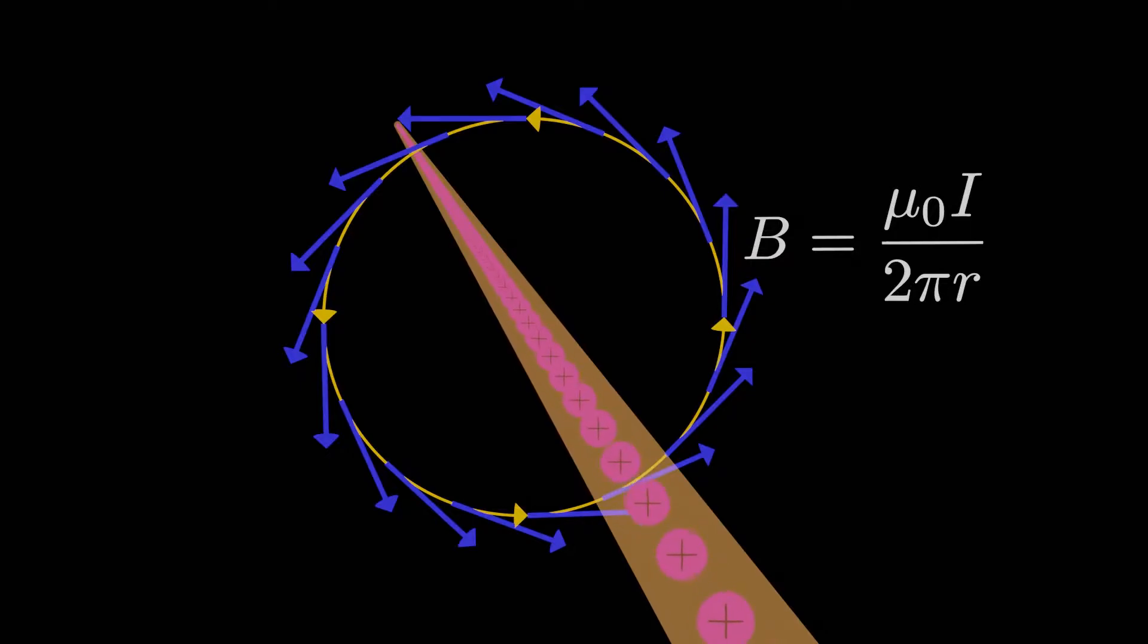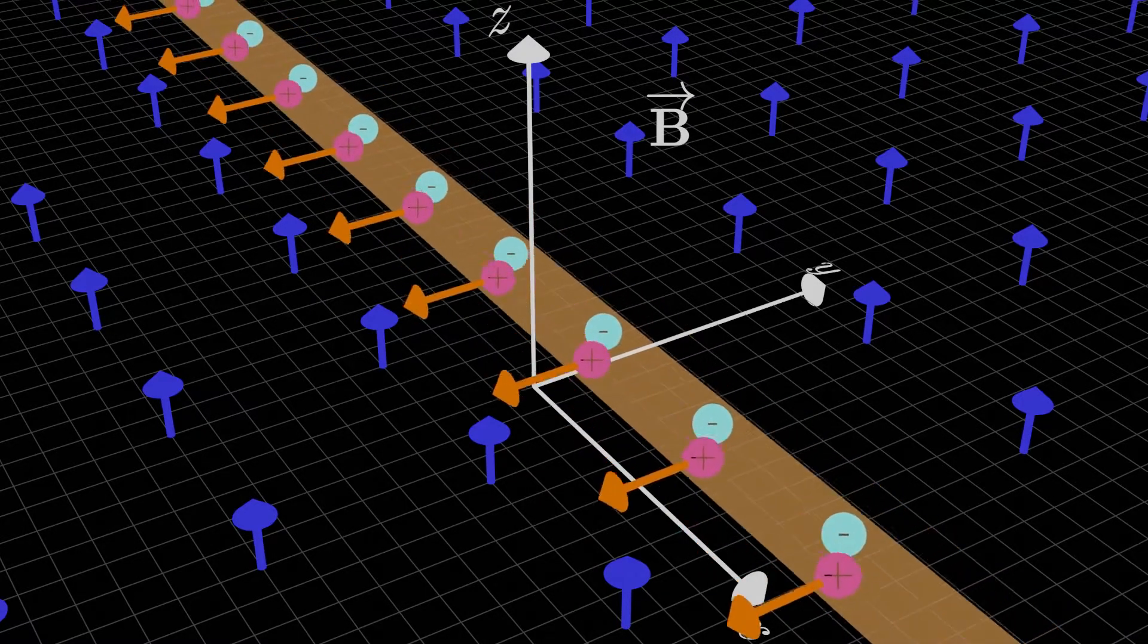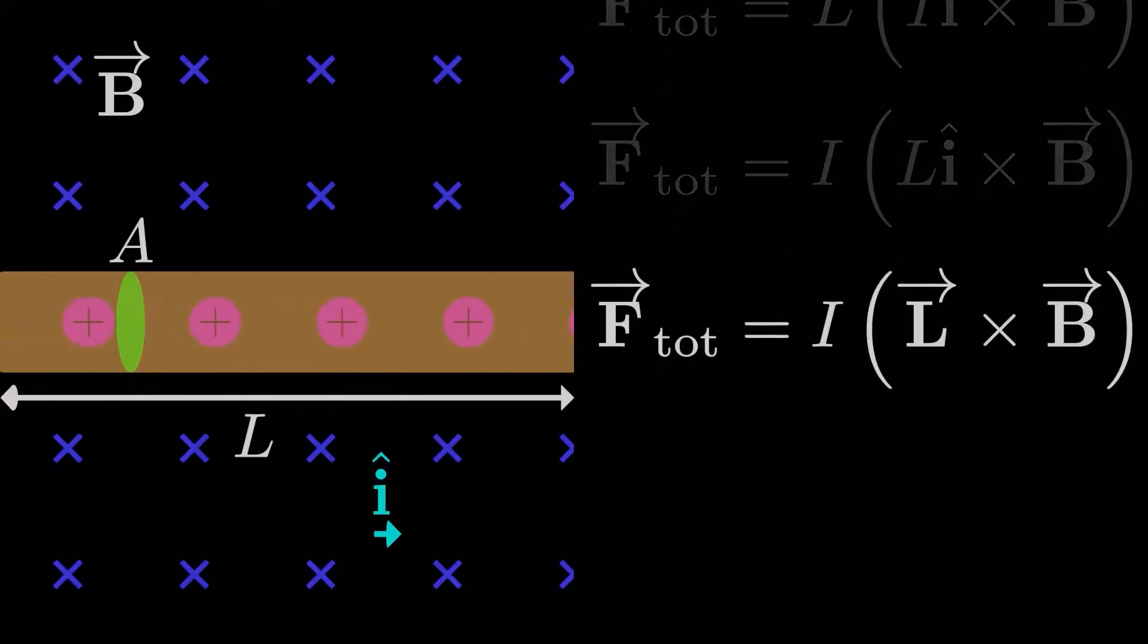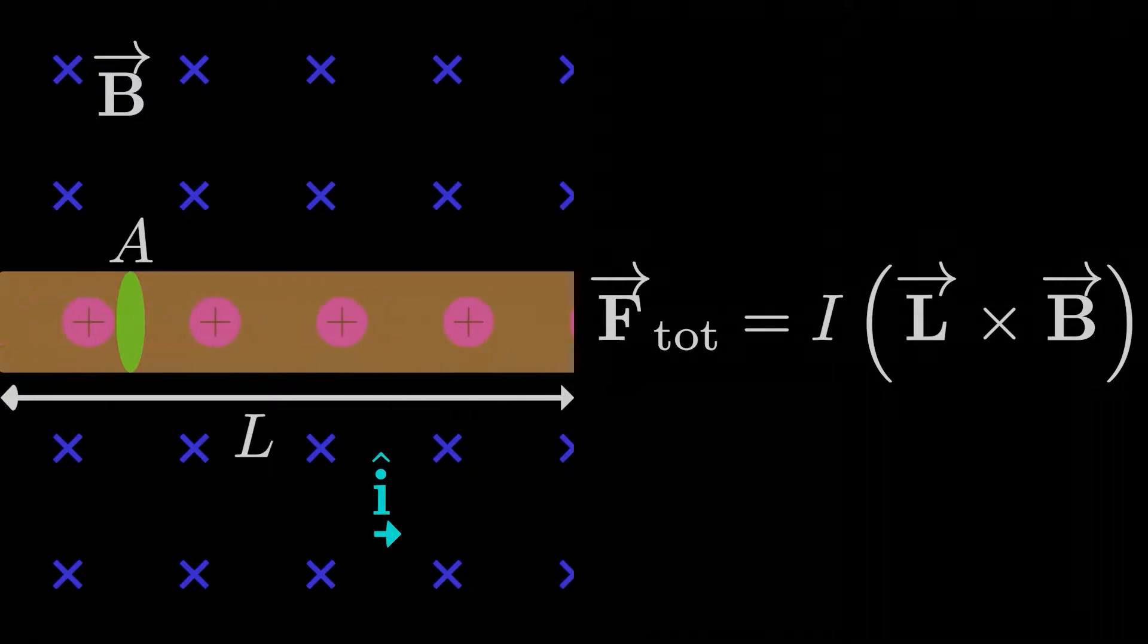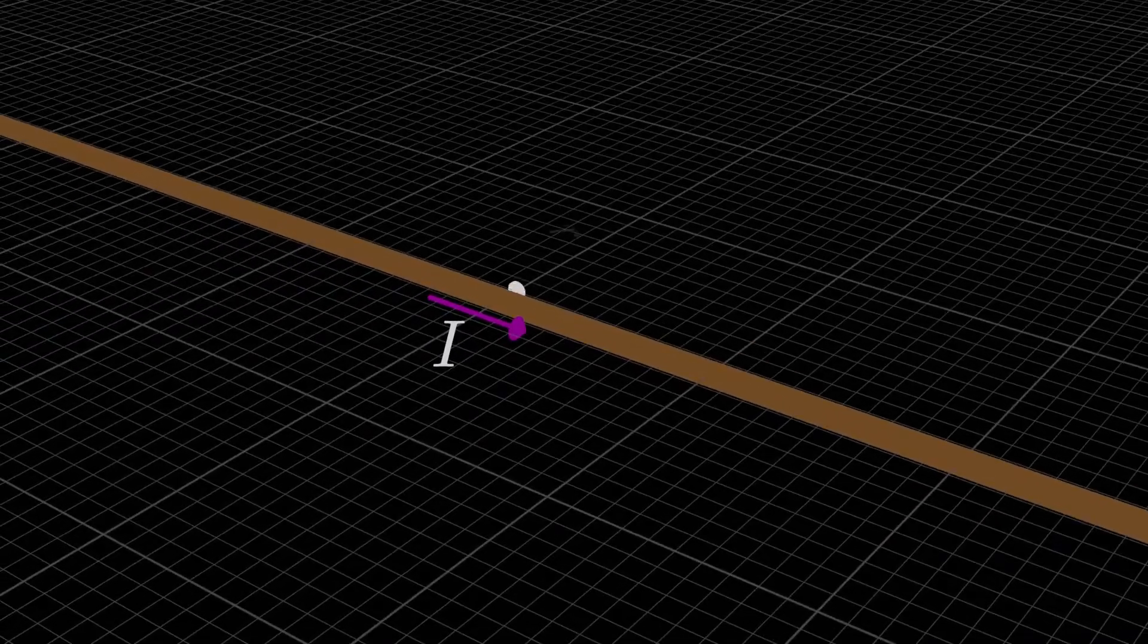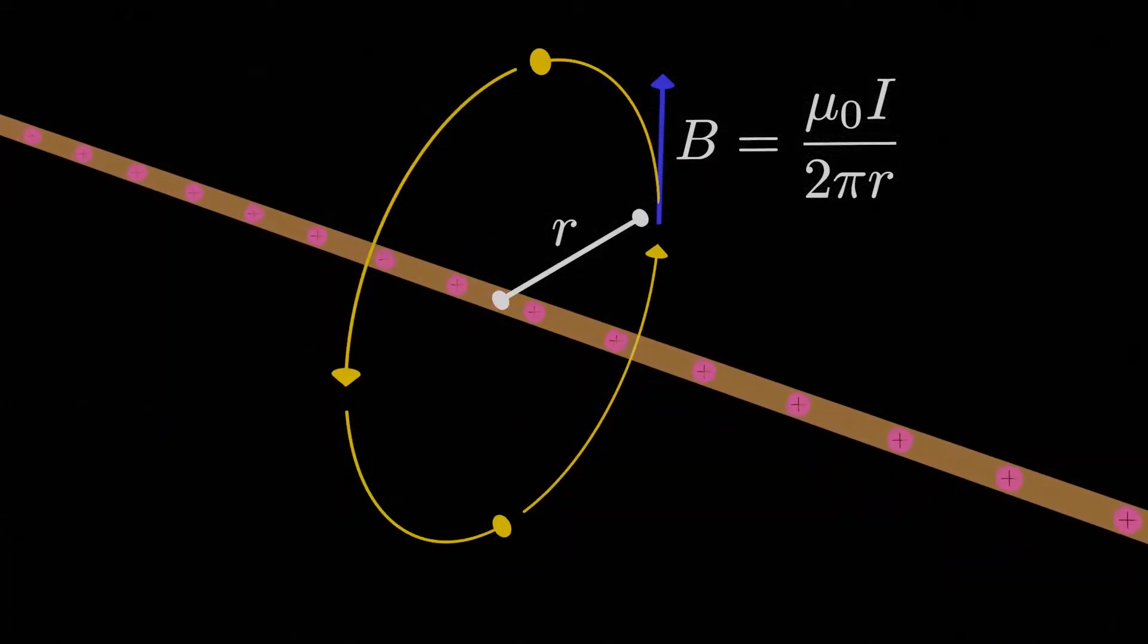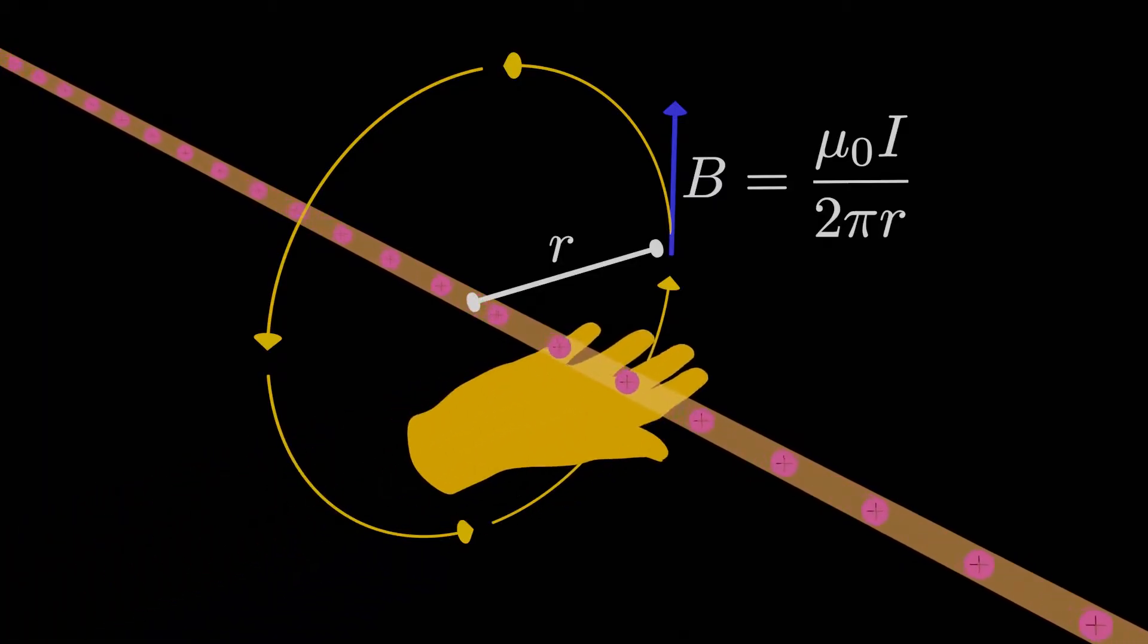We know from the previous module that a current carrying wire stuck in a magnetic field will feel a magnetic force that pulls on the wire in some direction. We saw the equation of the force felt by the wire was I L cross B, where B is the external magnetic field. We also now know, thanks to this lesson and the previous two lessons, that a current carrying wire generates its own magnetic field, given by this equation, and the modified right-hand rule gives us the direction of that magnetic field.